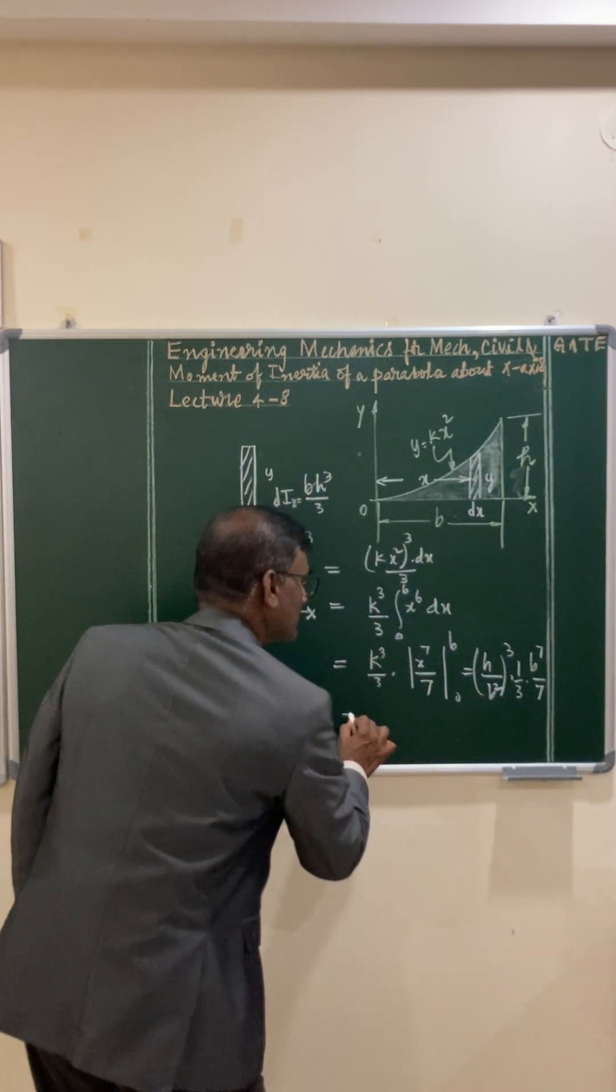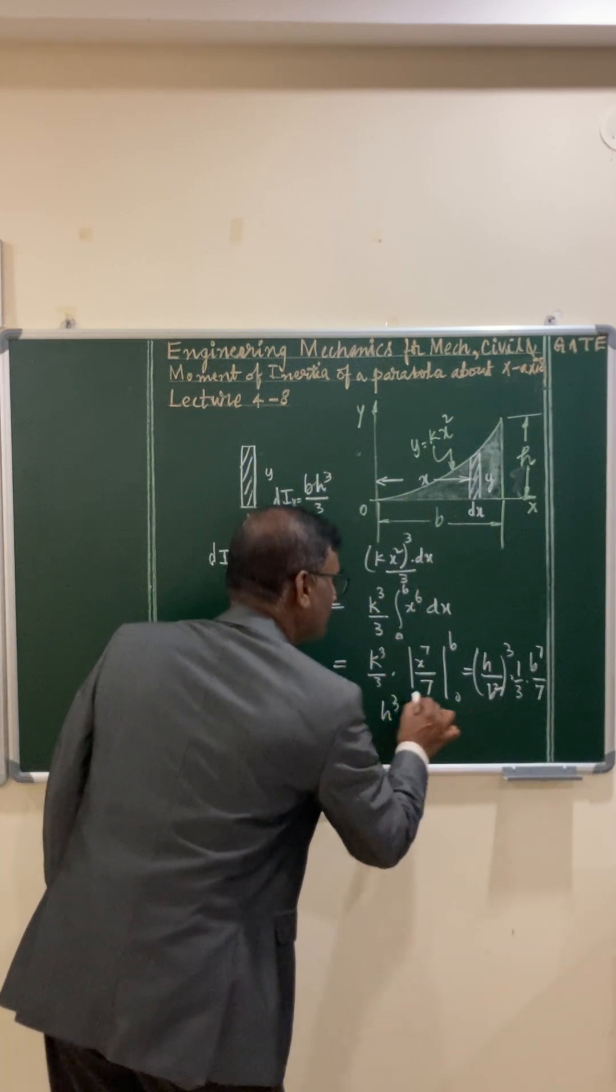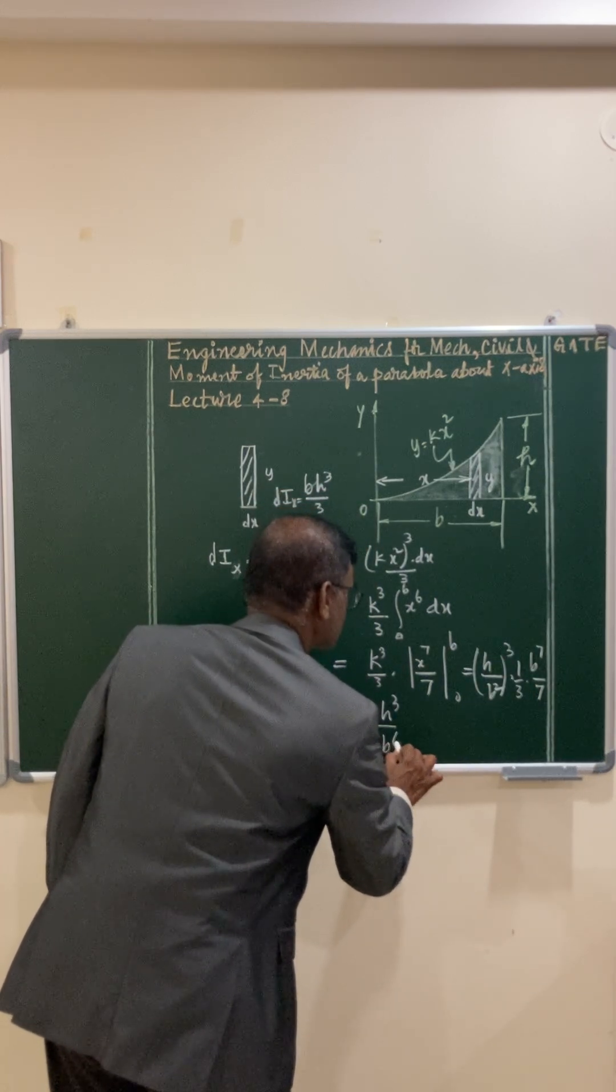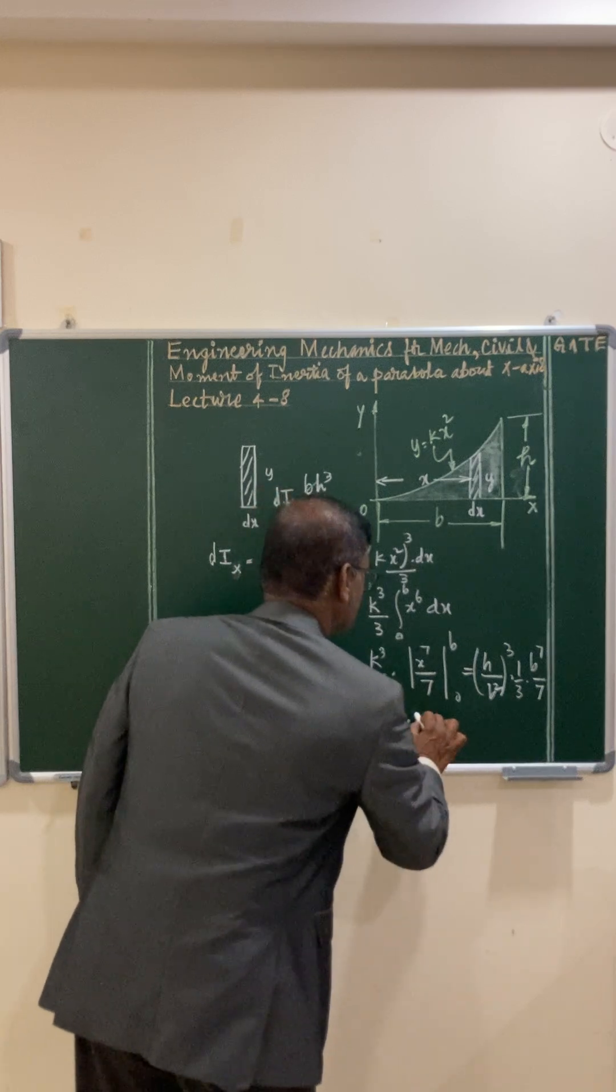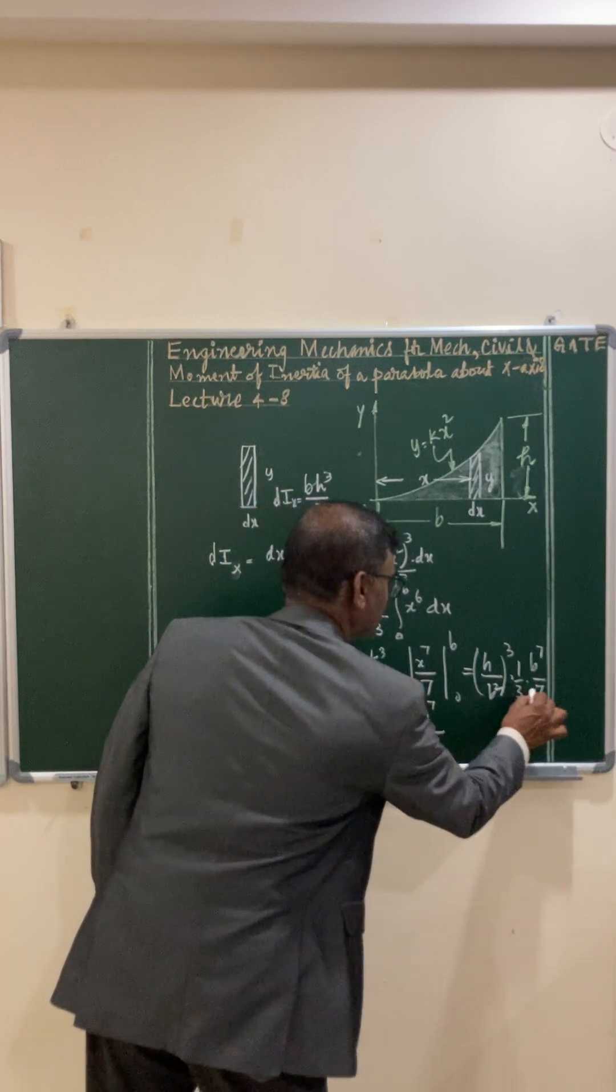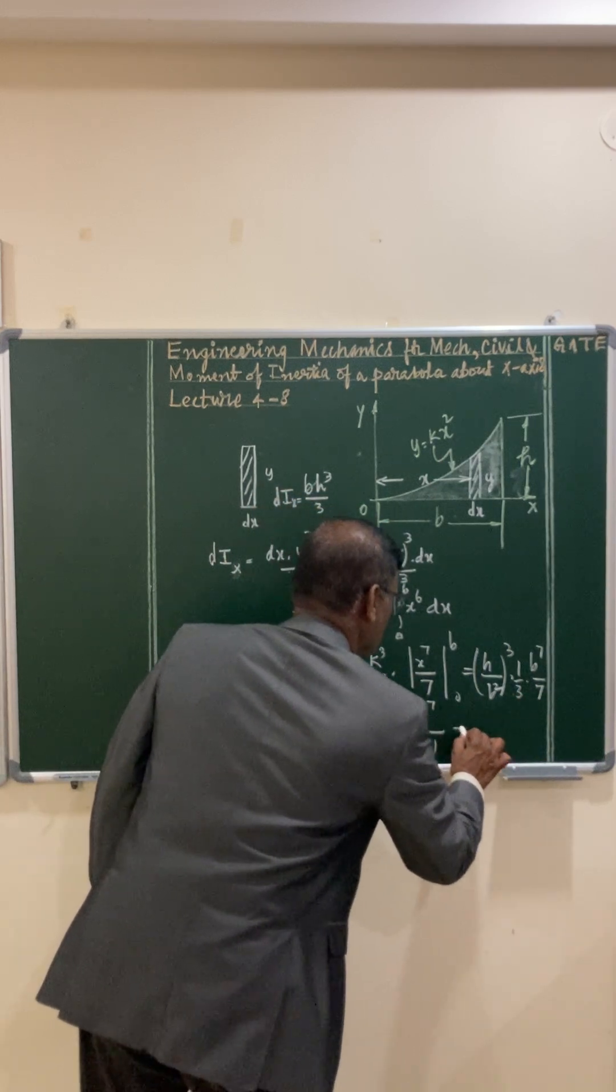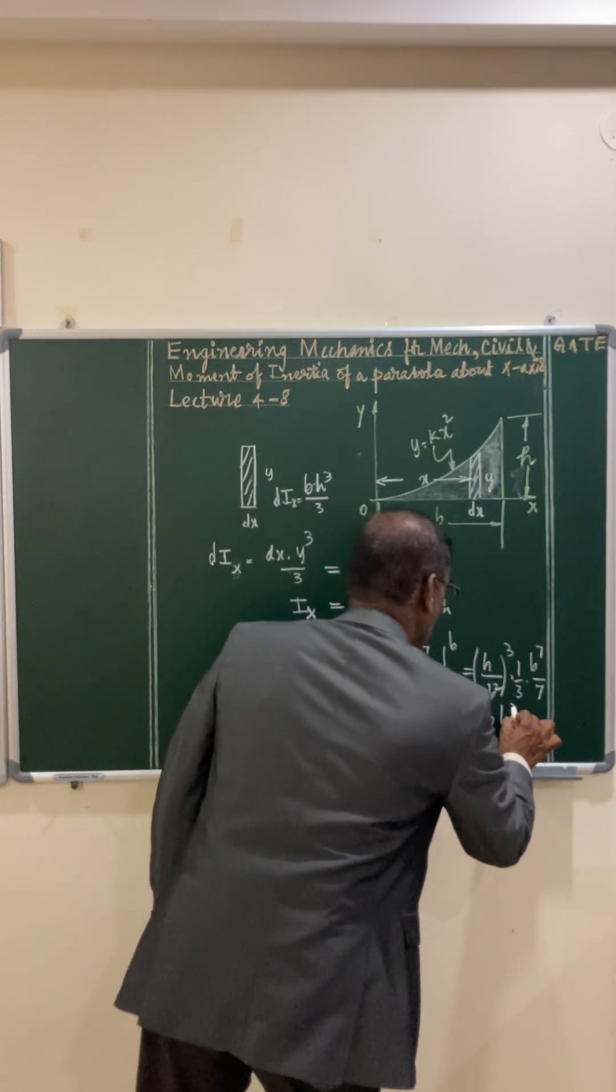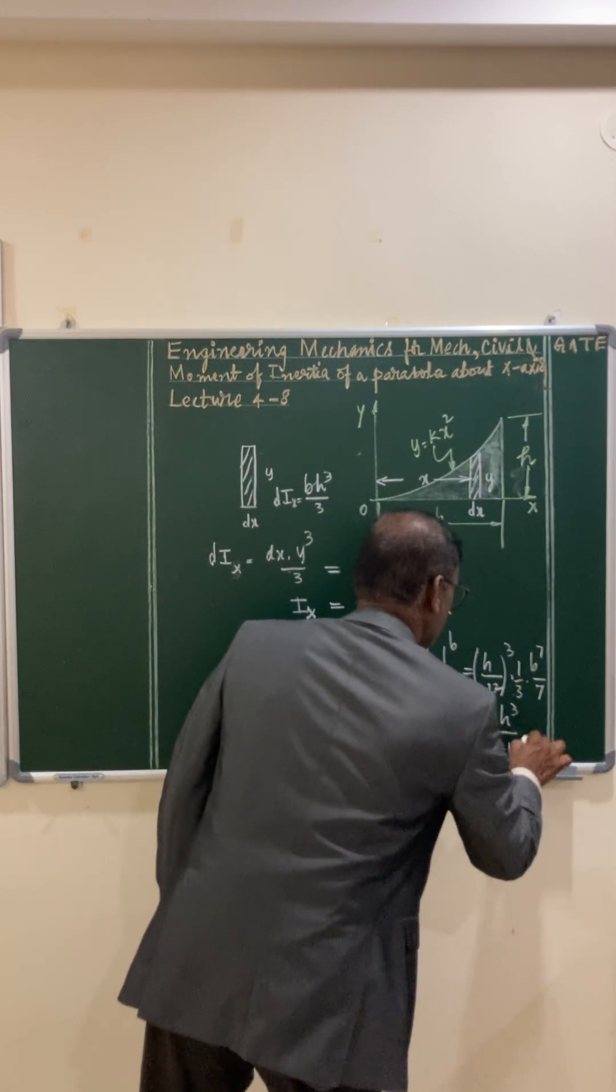So this becomes h³, that is b² whole cubed, that becomes 6, that is b⁶ into b⁷ divided by 7, 3, that is 21. So the answer is bh³/21.